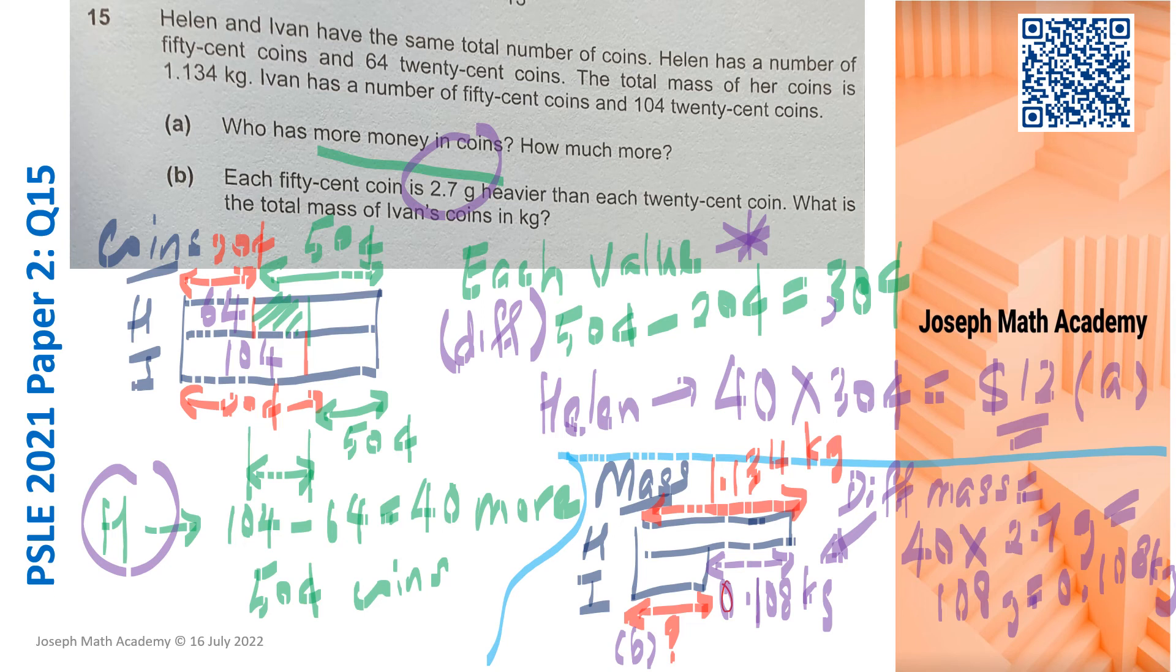So for part B, we have already solved Ivan's total mass of coins. It is simply taking 1.134 minus 0.108. So let me write down 1.134 subtract 0.108, that will give us 1.026 kg. So this 1.026 kg is already the answer for part B. And this question is actually solved. So it's not so difficult after all.